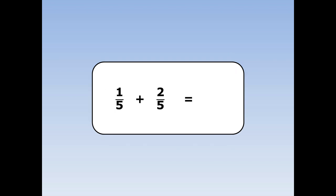1 fifth plus 2 fifths. We add the numbers on the top together, and the bottom number stays the same. 1 plus 2 is 3, and the 5 stays the same.